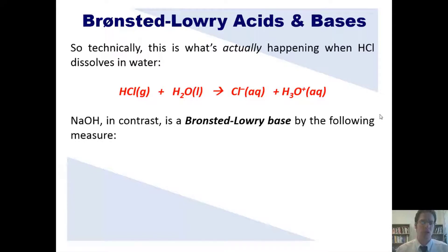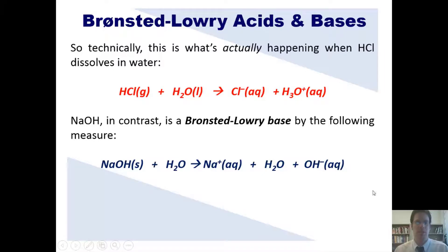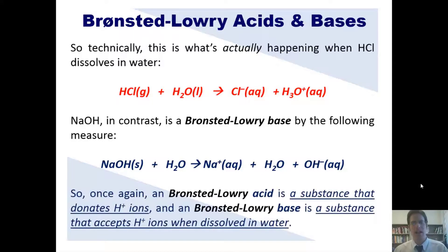NaOH, in contrast, is a Brønsted-Lowry base by the following measure. When NaOH dissolves in water, it dissociates to form sodium cation, and then the hydroxide OH⁻ removes one of the hydrogens from a water molecule to become H2O itself. The water, having lost a hydrogen, becomes hydroxide OH⁻ as well. We see then that this Brønsted-Lowry base, sodium hydroxide, has actually accepted a proton — in this case from water. So a Brønsted-Lowry acid donates H+ ions, while a Brønsted-Lowry base accepts H+ ions when dissolved in water.